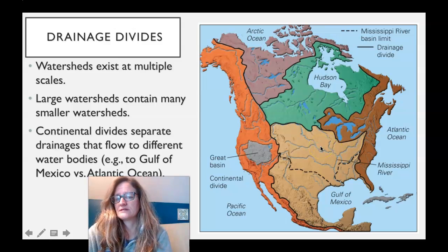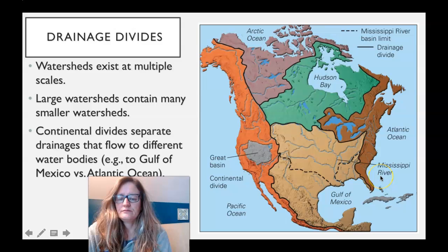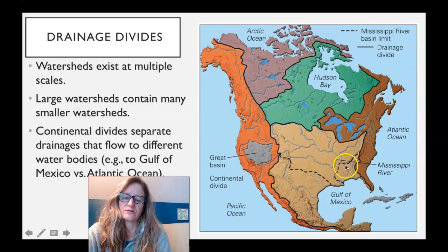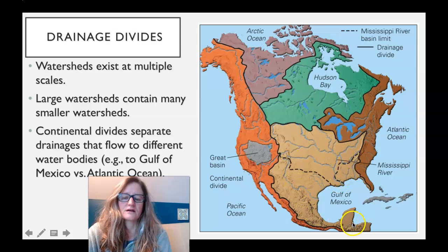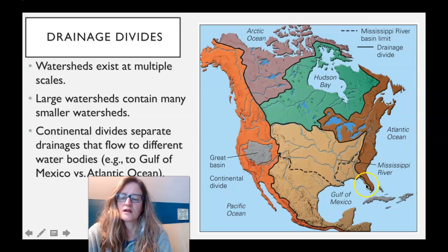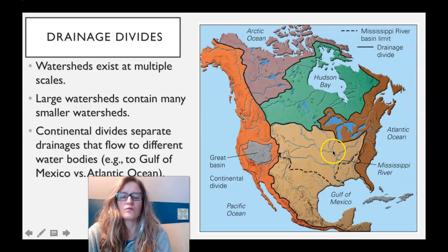There's no outlet to the sea — it just evaporates the water. In the middle of the United States, there is the watershed for the Mississippi, delineated here with this dashed line. All of this area in the lighter tan color drains down to the Gulf of Mexico.